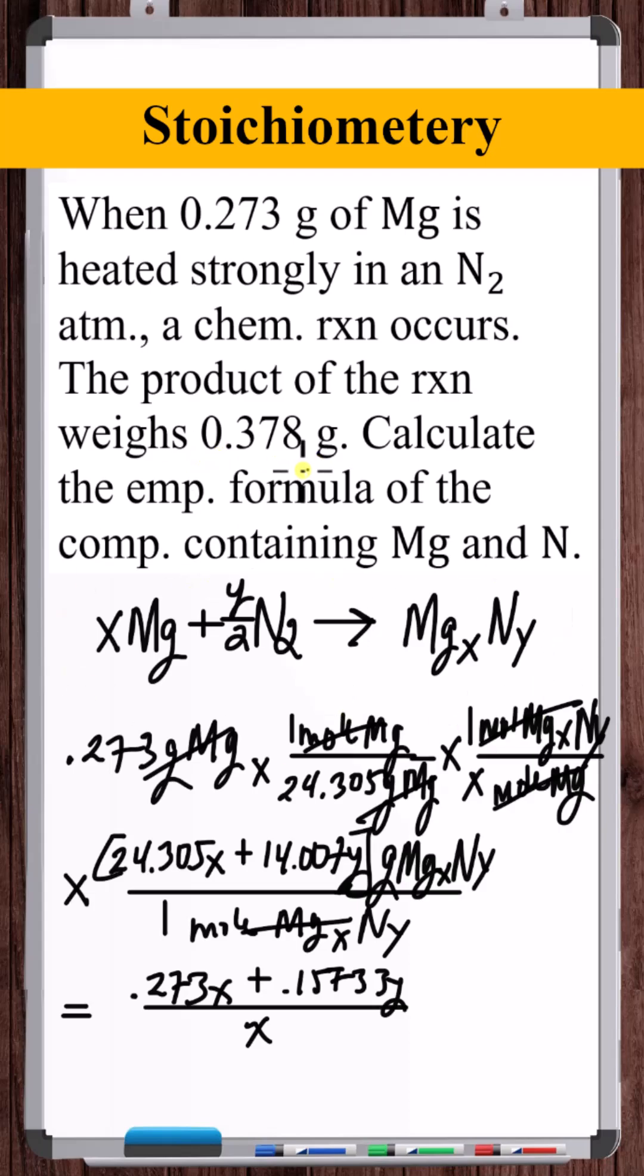It tells us how many grams of this magnesium-nitrogen compound are produced: 0.378. So we can set this equal to 0.378.